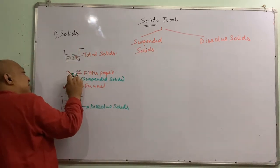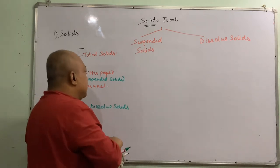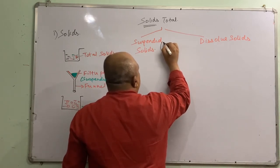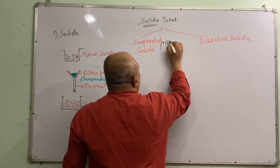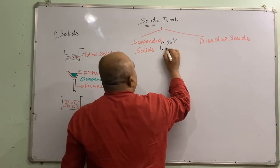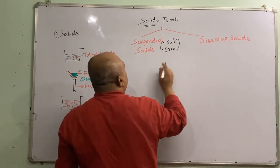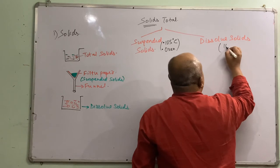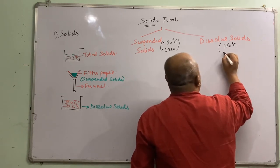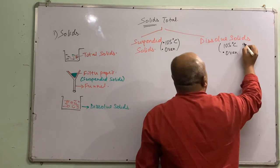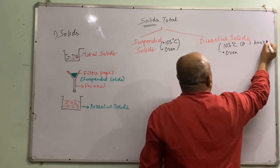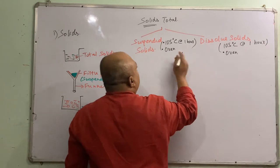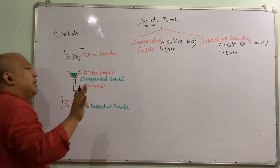Suspended solids cannot be measured immediately because they are wet — they have to be dried. The process is to dry them at 105 degrees centigrade using an oven for around one hour. The same applies to dissolved solids: dry at 105 degrees centigrade using an oven for one hour to get the dry weight for measurement.